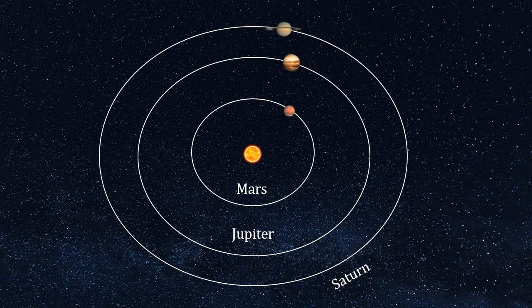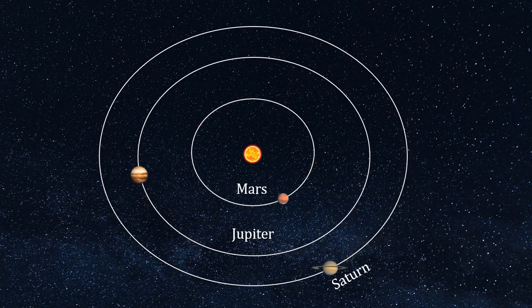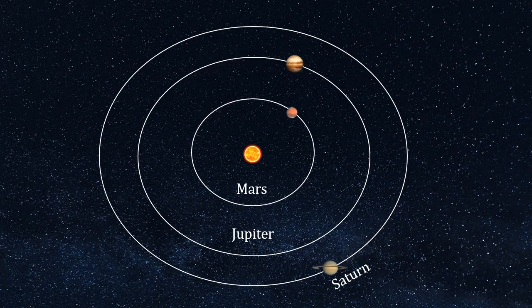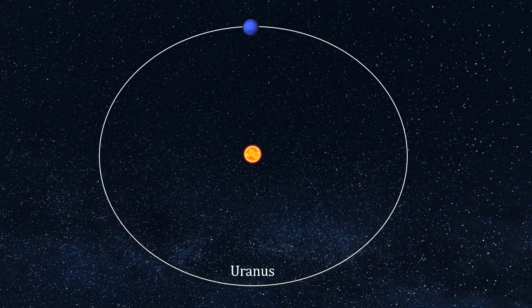By this point in time, astronomers had observed the orbits of the known planets in great detail. While the orbits of Mars, Jupiter, Saturn followed the path predicted by Sir Isaac Newton's law of gravitation to the finest detail, there was a problem with Uranus.